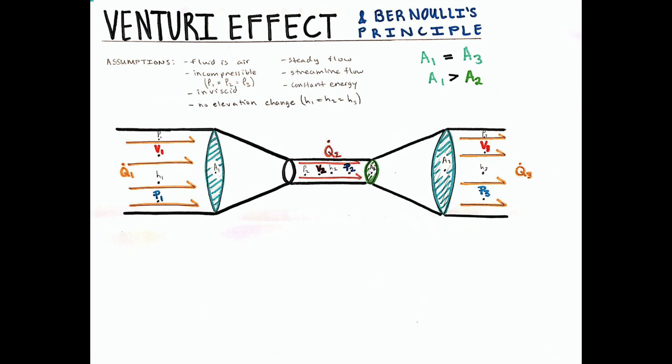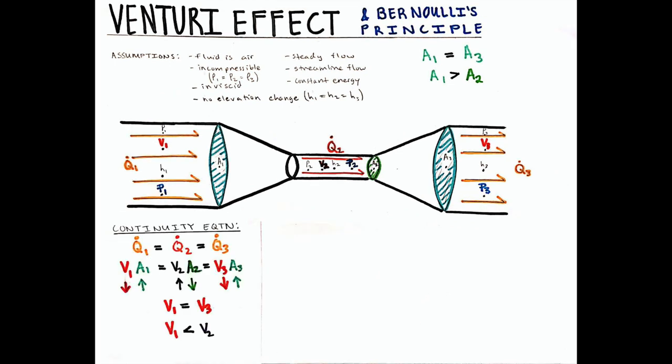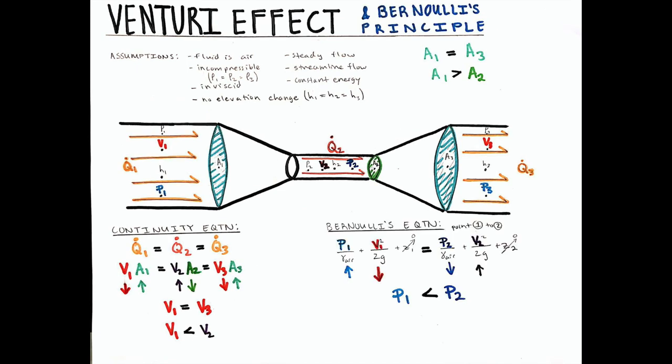Bernoulli's equation, under certain assumptions, combined with the law of conservation of mass, mathematically proves the following: as the cross-sectional area of a pipe is constricted or becomes smaller, the velocity of the fluid within will increase. The Venturi effect states that as the velocity increases, in order to maintain constant energy, the pressure within the pipe must decrease.